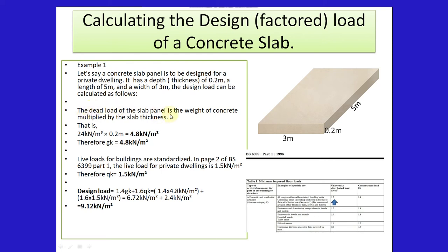The dead load of the slab panel is the weight of the concrete multiplied by the slab thickness. So that is 24 kilonewtons per meter cubic times 0.2 meters, which gives us 4.8 kilonewtons per meter squared. Therefore, GK is equal to 4.8 kilonewtons per meter squared. Because the unit is in kilonewtons per meter squared, we don't need the width of the slab which is 3 meters and the length of the slab which is 5 meters in the calculation.